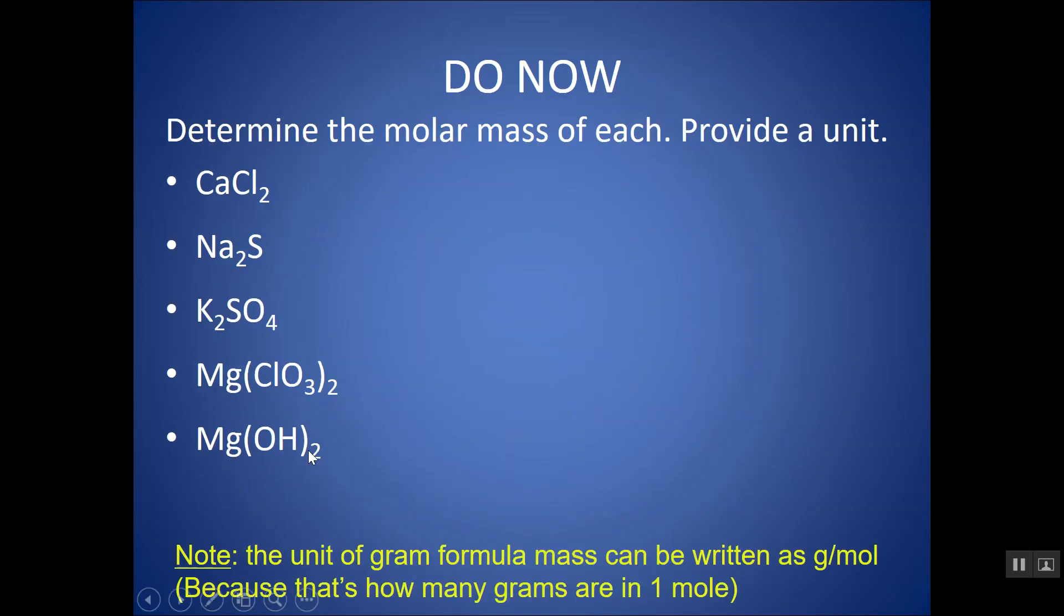You would do the same exact thing as we did before. So CaCl2, there's one Ca weighs 40, two chlorines weighs 35.5, and I get 111, but now I'm going to give it the units g/mol. This is going to actually let us use the molar mass as a conversion factor between grams and moles. You might want to take a moment, try the other examples just for practice, and check your work.